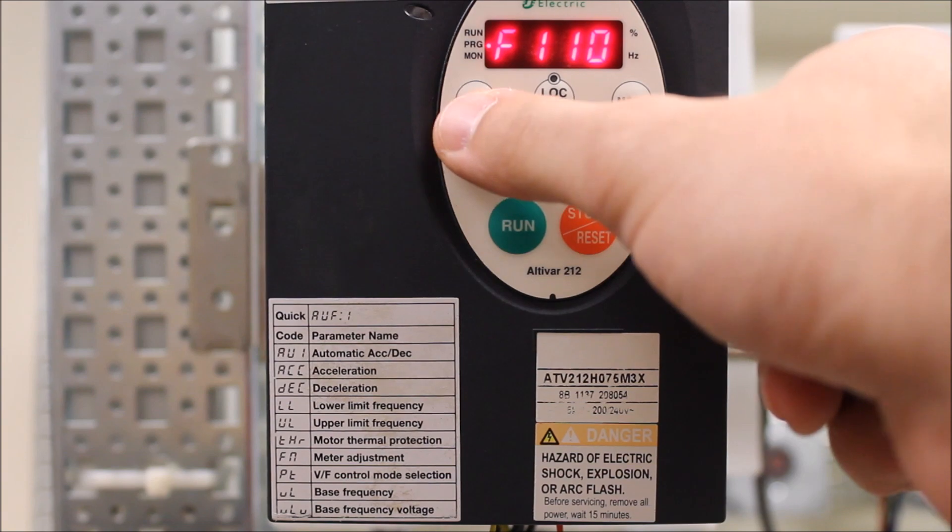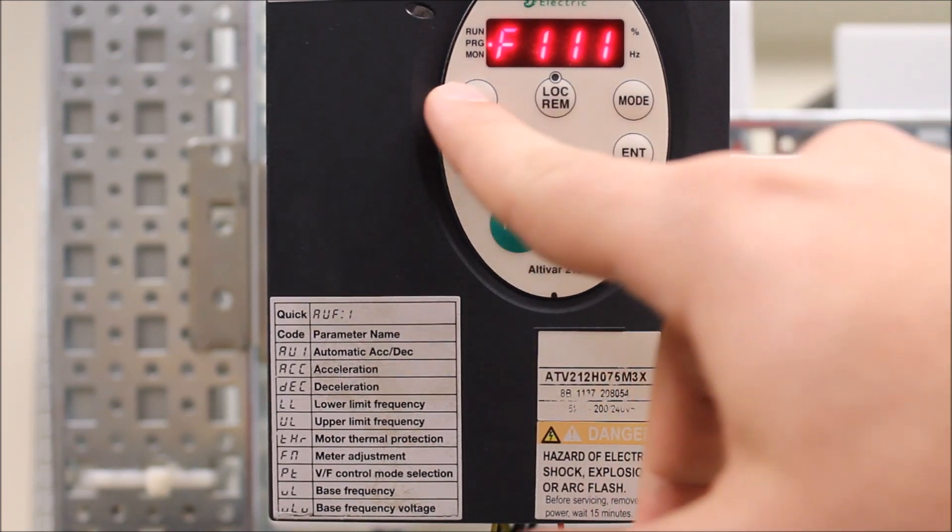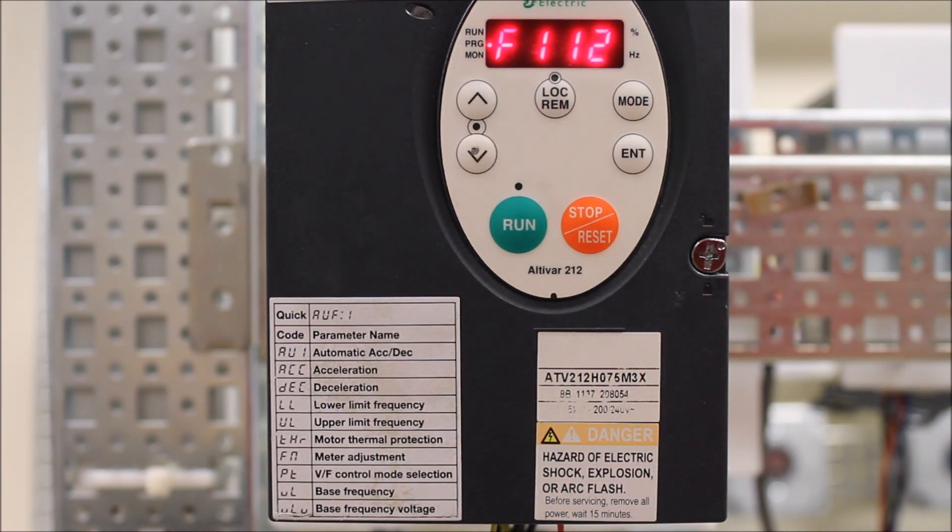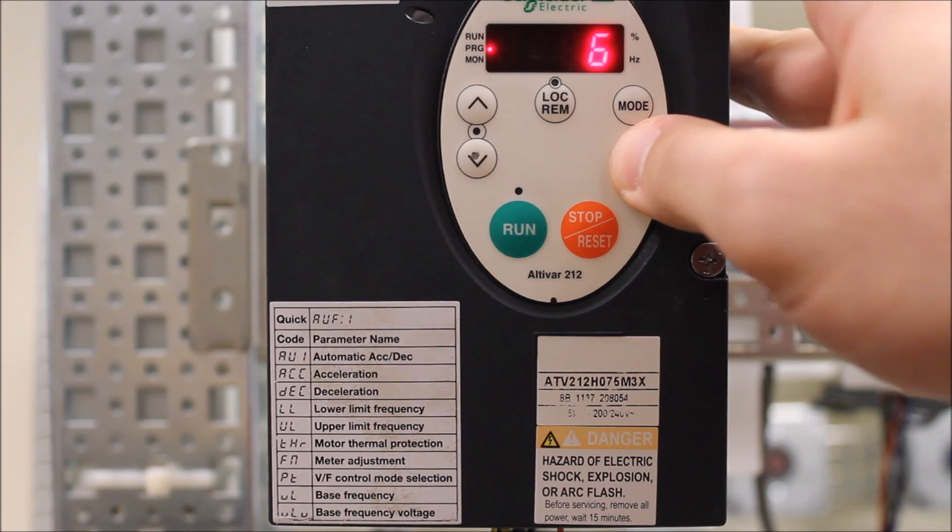And of course, the next parameter is F112. Now, keep in mind F111 is for the F terminal. F112 is for the R. Like I said before, we're going to use R as a permissive. And F113 is for the RES terminal. But we need to go ahead and adjust R terminal. So go ahead and enter on F112.